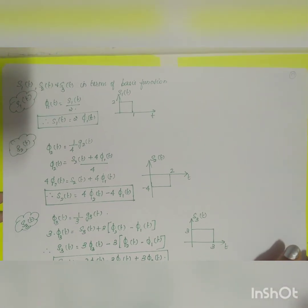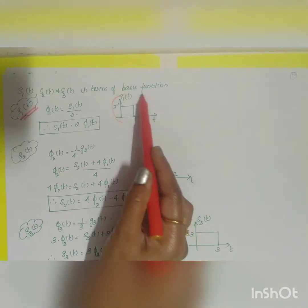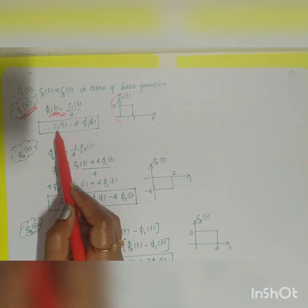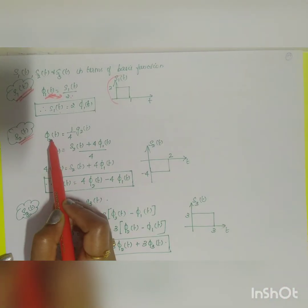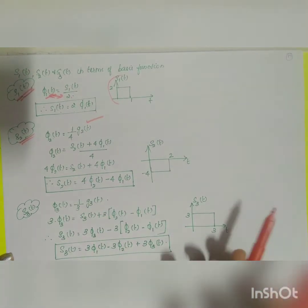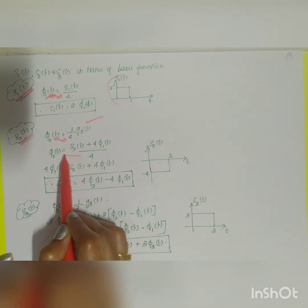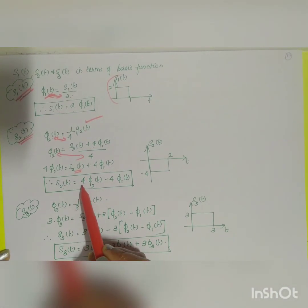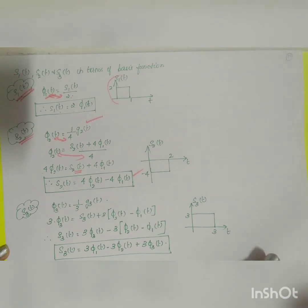Now for the second task — expressing the signals in terms of basis functions. s1(t): since φ1(t) = s1(t)/2, cross-multiplying gives s1(t) = 2·φ1(t). s2(t): since φ2(t) = (1/4)·g2(t) and g2(t) = s2(t) + 4·φ1(t), cross-multiplying and rearranging gives s2(t) = 4·φ2(t) − 4·φ1(t).